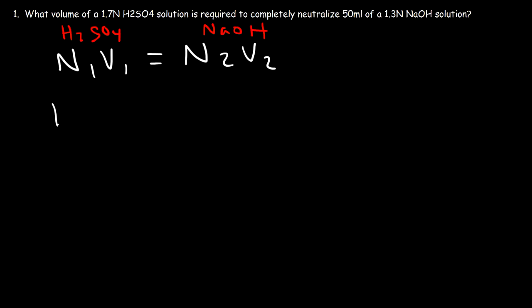So the normality of sulfuric acid is 1.7. We're looking for V1, the volume of H2SO4 that we need to completely neutralize all of the base in the solution, and the normality of sodium hydroxide is 1.3, and V2 is 50 milliliters.